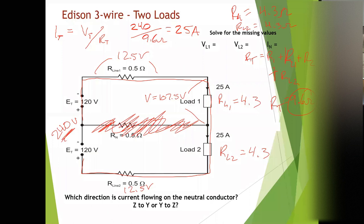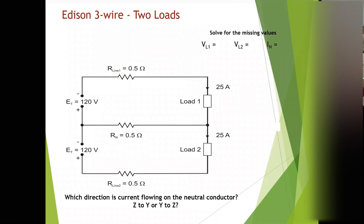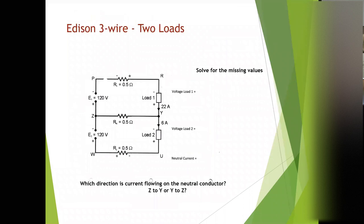Now let's get to unbalanced. If you look here, we now have 22 amps for our load one, and we have 6 amps for our load two. Going back to that question of which direction then is the current going to be flowing? Z to Y or Y to Z?